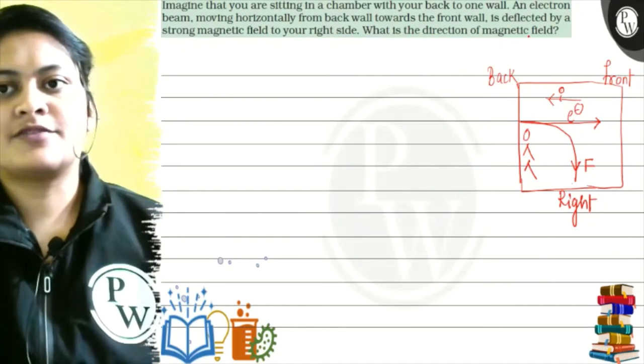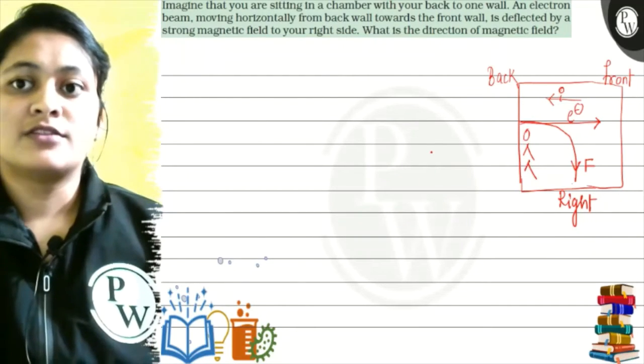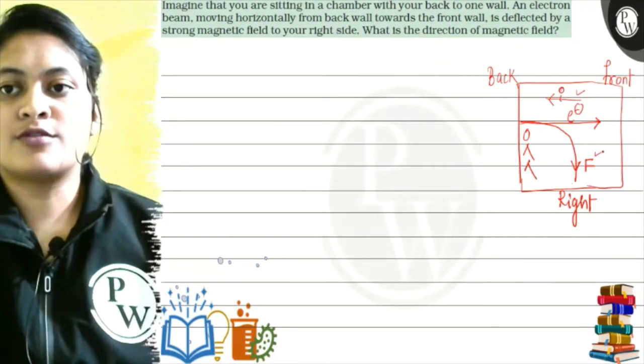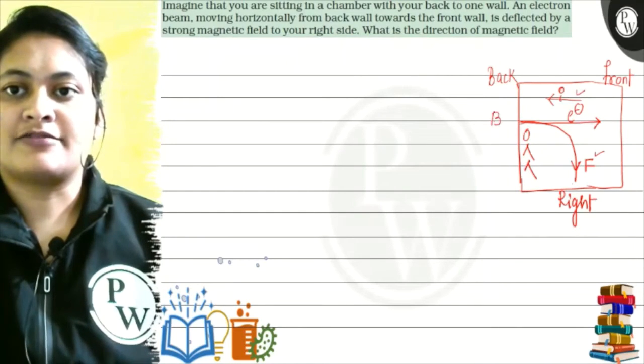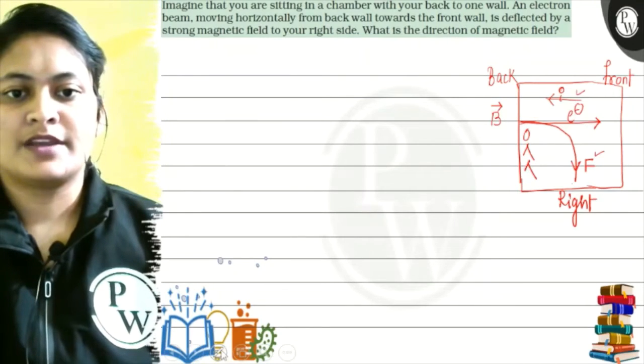So, what is the direction of the magnetic field? You know that current, the force and the magnetic field, are the three perpendicular ones. They are perpendicular to the other one. Right?